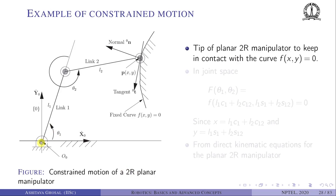Consider a planar 2R manipulator with joint angles theta_1 and theta_2, x-y axes, and end-effector point P(x, y). We want this end-effector to trace a curve given by f(x, y) = 0 — a fixed curve in the plane. At any instant along this curve we have a tangent vector and a normal vector to the curve.